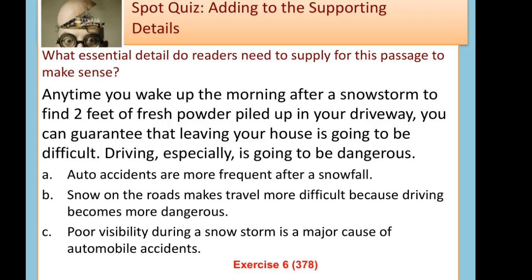Living in Wisconsin, you know that all three of these are probably true — but that's not what we can infer from the information given in the details of this paragraph. Accidents increasing after a snowfall can't be supported by the details provided, nor can poor visibility being a major cause of accidents. The only thing we can correctly support and infer is that snow on the roads makes travel more difficult because driving becomes more dangerous. You can pause the video here to complete Exercise 6, or stay tuned to finish the PowerPoint.